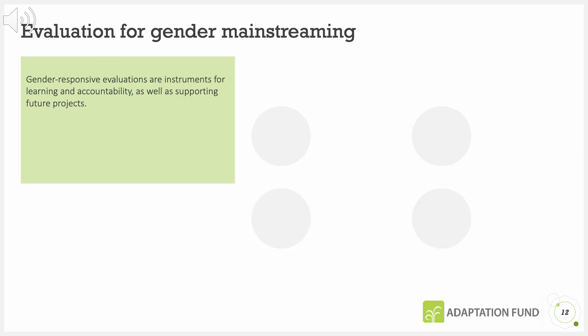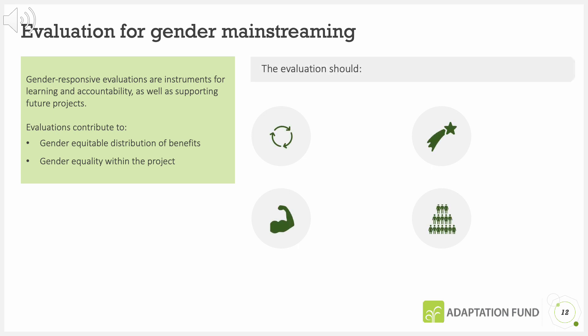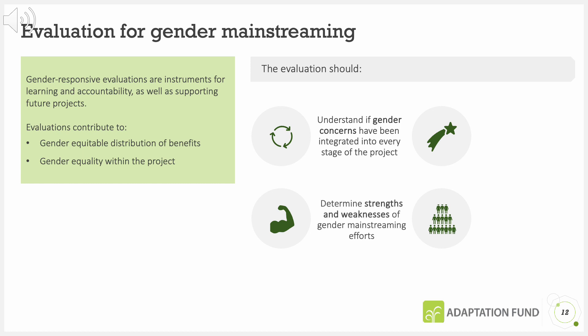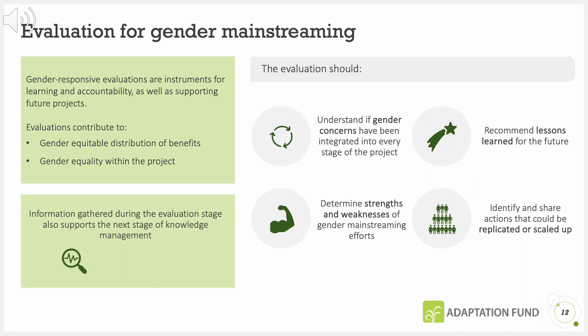Gender responsive evaluations are instruments for learning and accountability as well as supporting future projects. Evaluations contribute to gender equitable distribution of benefits and gender equality within the project. The evaluation should understand if gender concerns have been integrated into every stage of the project, determine strengths and weaknesses of gender mainstreaming efforts, recommend lessons learned for the future, and identify and share actions that could be replicated or scaled up in similar future interventions. Information gathered during the evaluation stage also supports the next stage of knowledge management.